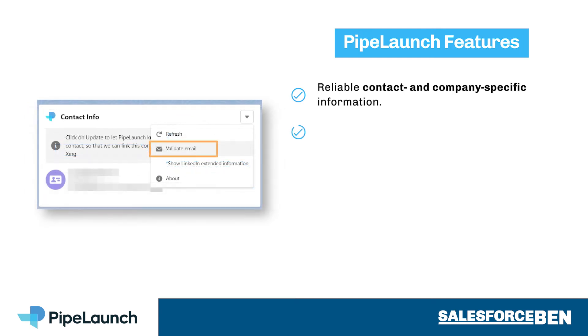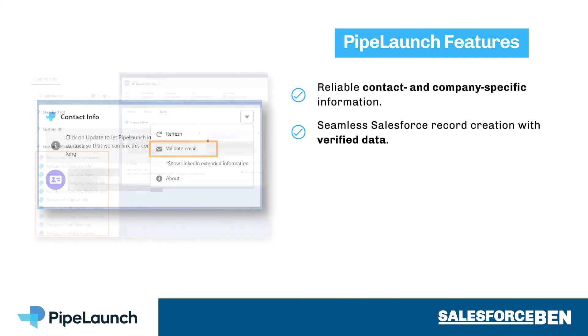Ensure your team's emails always reach their recipient through Pipe Launch's mechanism for verifying deliverability, either on record creation or on demand.